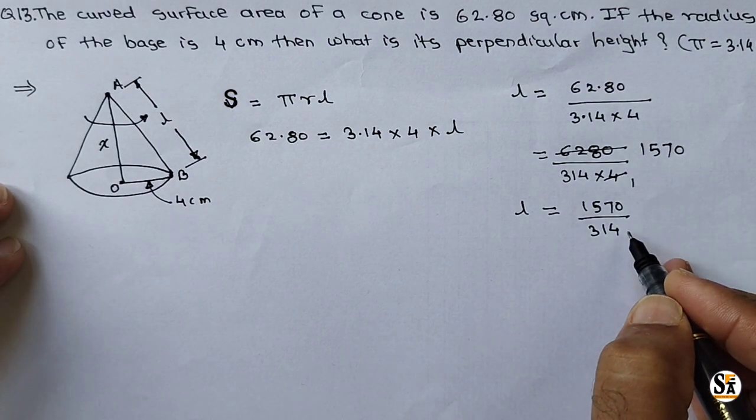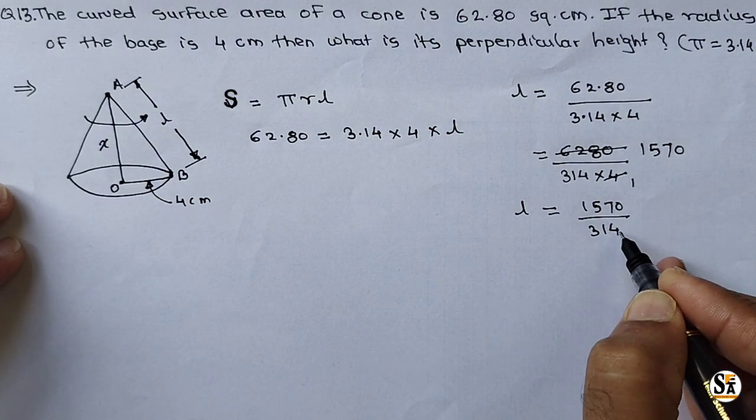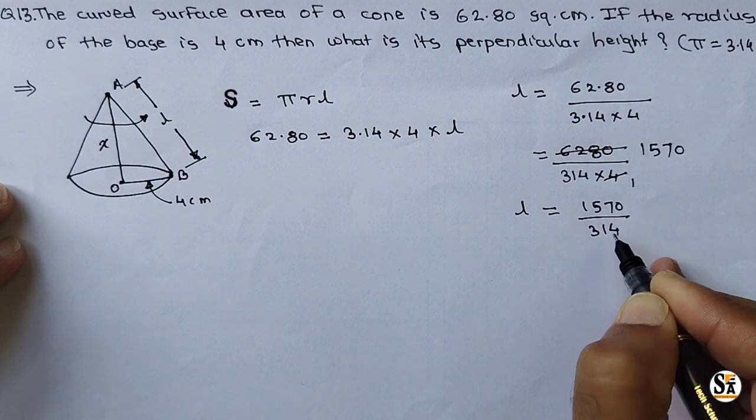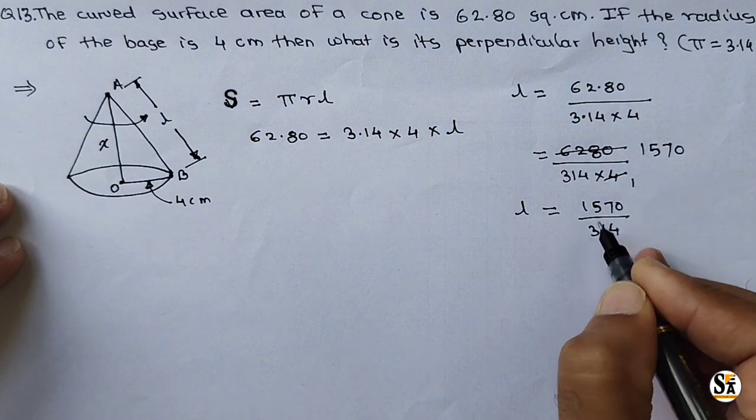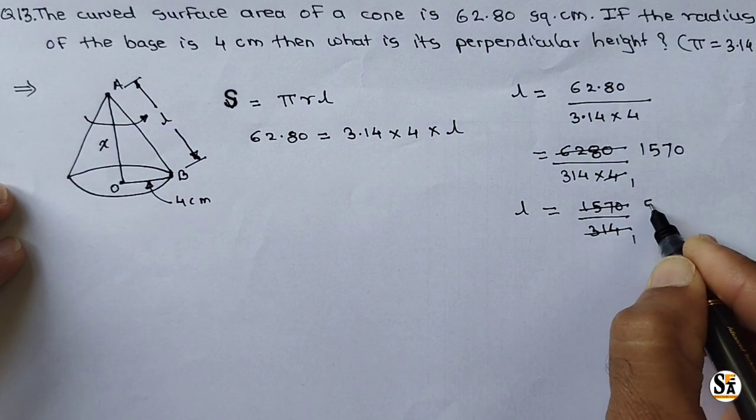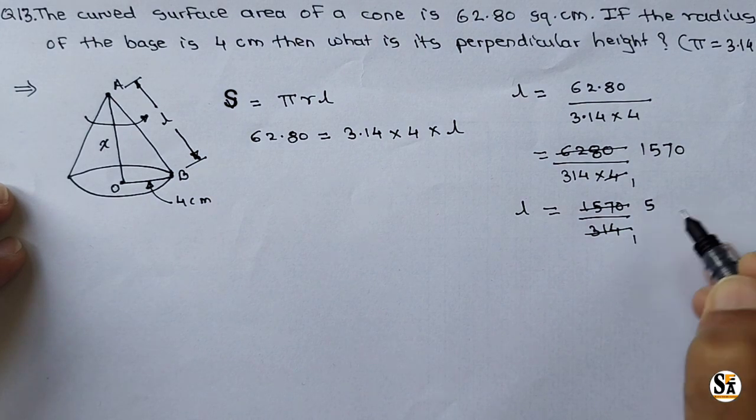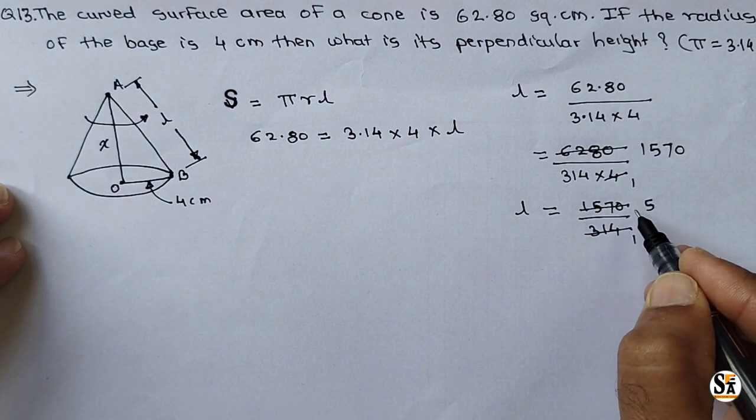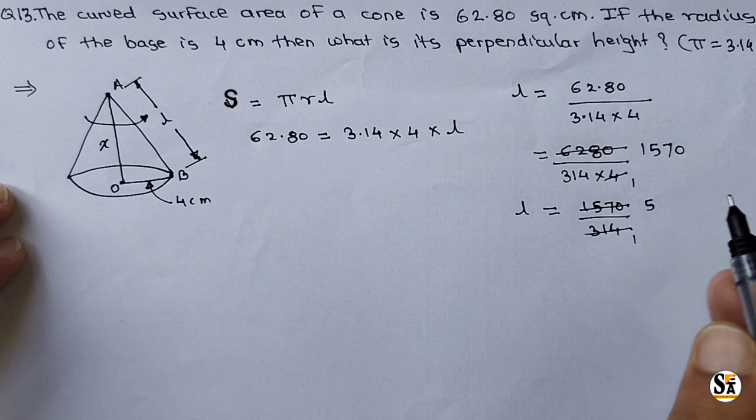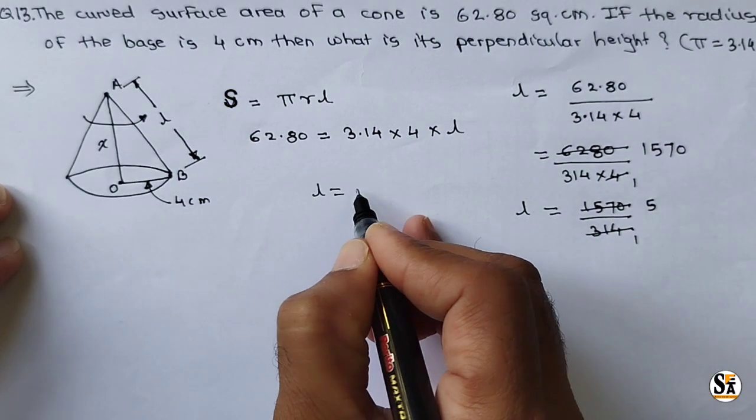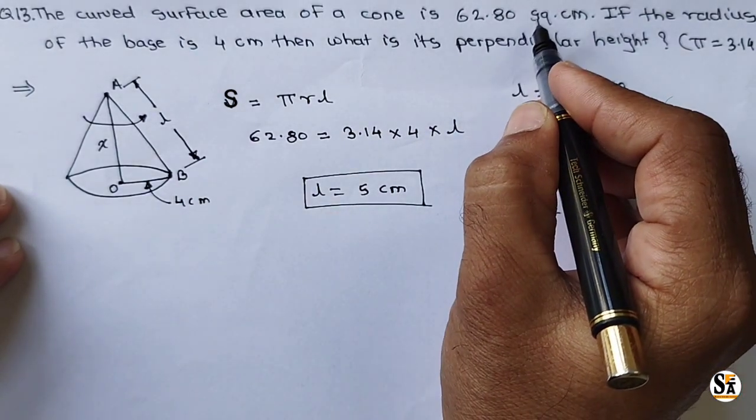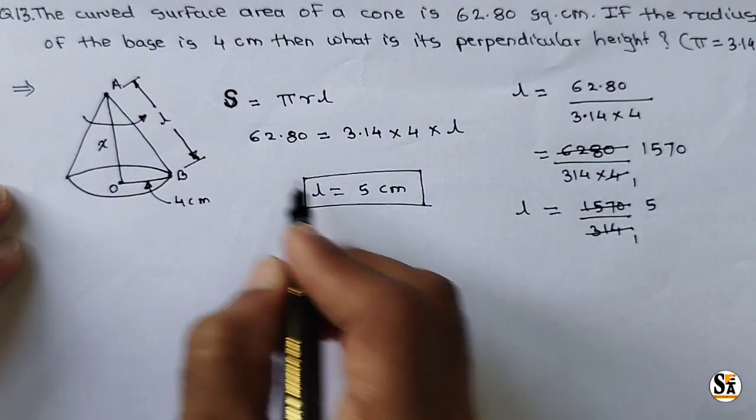Now see here, we can use a trick. 314, it is a big number, and 1570. But if we see, if we multiply it by 5, we can guess 5 of 15 and 5 of 70. So directly we can write here 1 and here 5. Or you can calculate, you can also calculate 314 into 5, that will come 1570. This is a simple trick because in such questions the numbers are always given like this. So we got L equal to 5 centimeter. Unit is centimeter. Always write the unit, because unit of this area is given square centimeter.